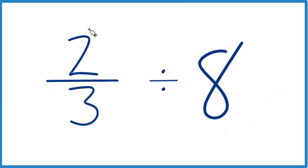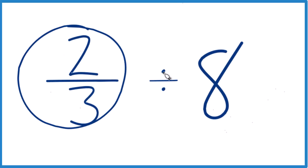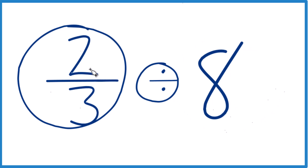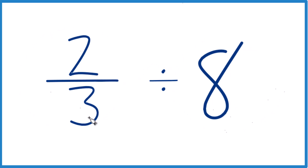Here's how you find two-thirds divided by eight. Two-thirds is less than one, so we're trying to see how many times eight fits into a number less than one. It's going to be a small number — we're going to get a fraction. So keep that in mind.